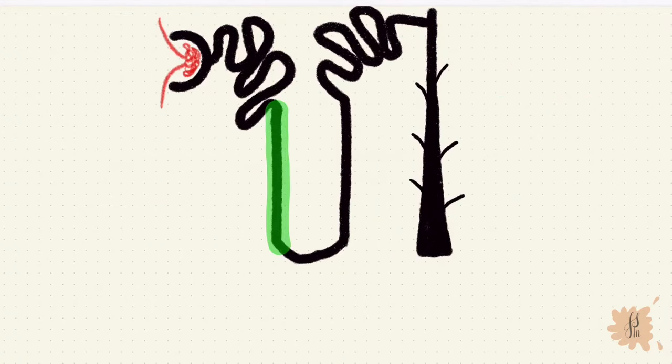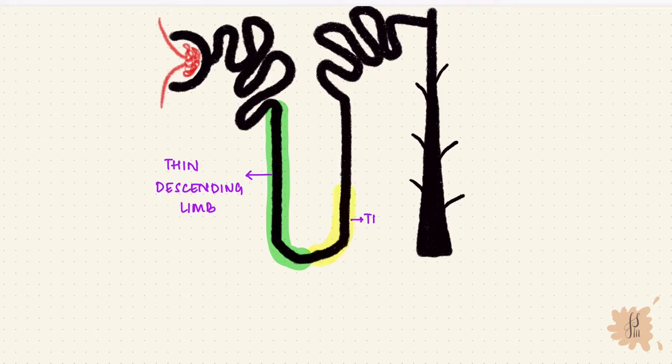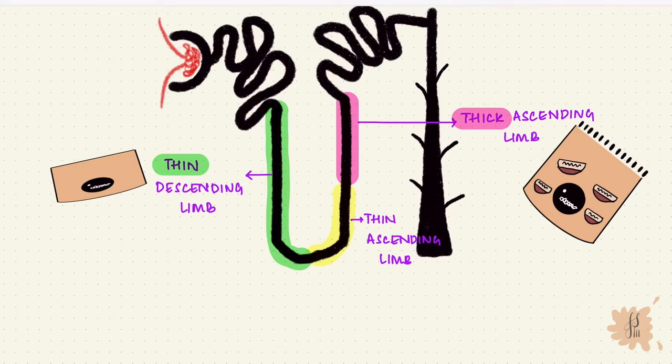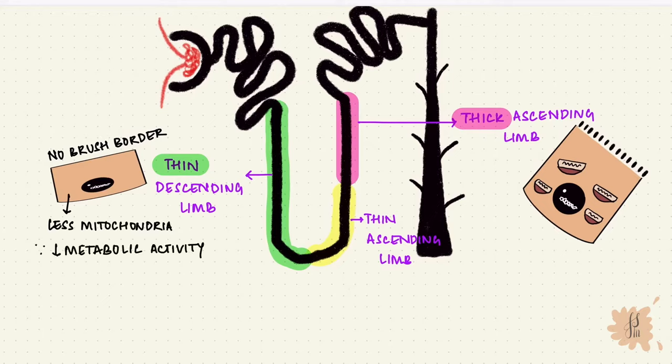The loop of Henle has a thin descending limb, a thin ascending limb and a thick ascending limb. The thin and thick are related to the thickness of the epithelium rather than the diameter. The thin portion has no brush border, lesser mitochondria because it has a lesser metabolic activity. It's mainly involved in simple diffusion of water.